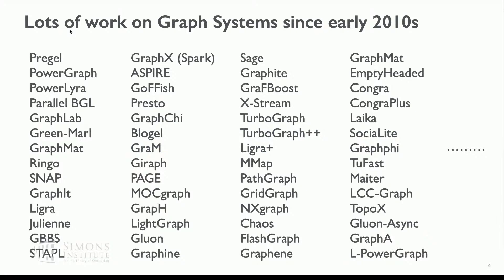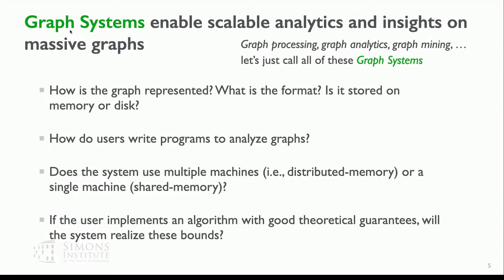There's been a lot of work motivated by this problem on graph systems — people cared about graph processing a lot in the 2010s with hundreds of papers written. Key questions span algorithms, representations, and programming language considerations: how is the graph represented and stored, what hardware is used (in memory vs. external memory), how do users write programs to analyze these graphs, and whether the system uses distributed or single shared-memory machines. I'm going to focus on the single shared-memory machine setting with multiple cores.